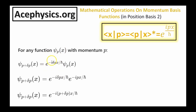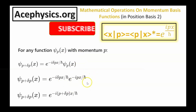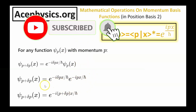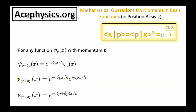The momentum translation operator is e to the minus i times some small change in momentum times x over h-bar. If I operate this onto psi of p and replace psi of p with what it is — the complex exponential e to the minus i p x over h-bar — then when I multiply these two together, I get a new function which is by definition psi of p plus delta p. This is a complex exponential with constant p plus delta p, where x is a variable.